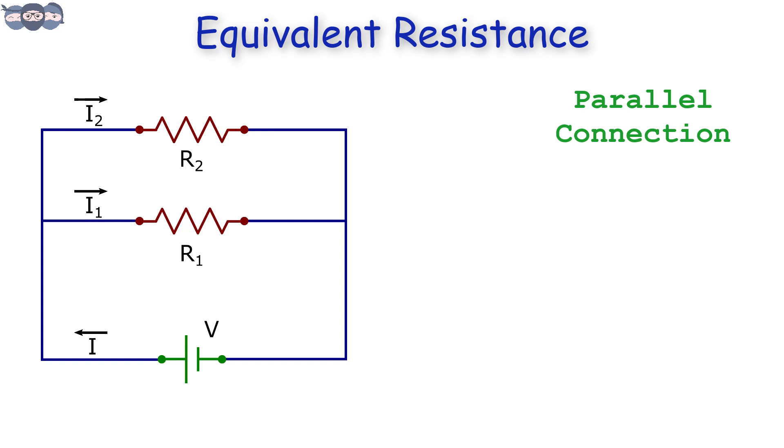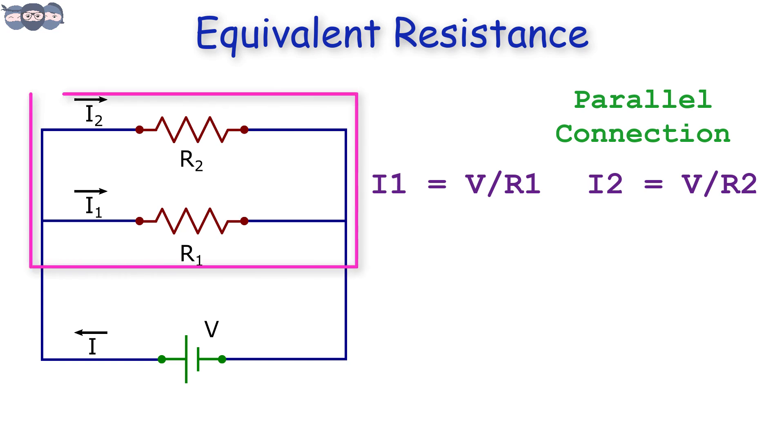Then, I1 equals V by R1 and I2 equals V by R2. Suppose R equivalent is the parallel equivalent. Then, I equals V divided by R eq.